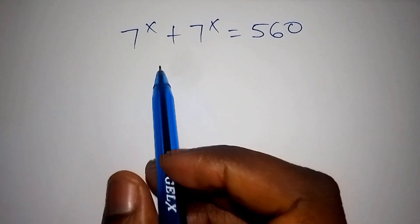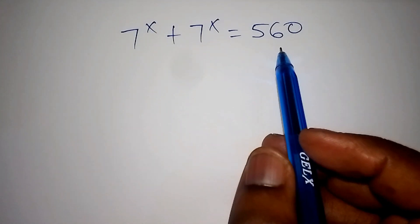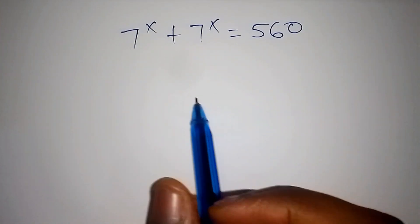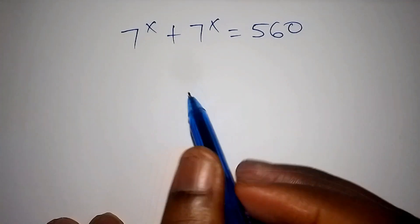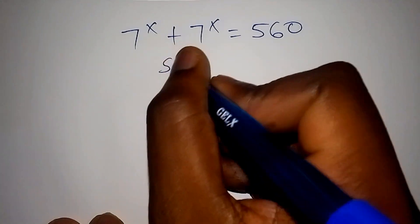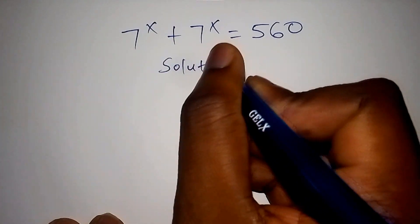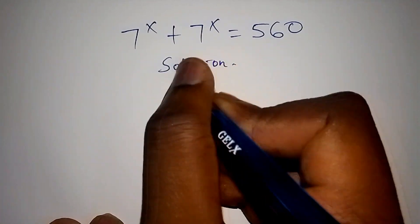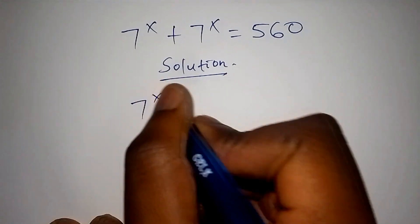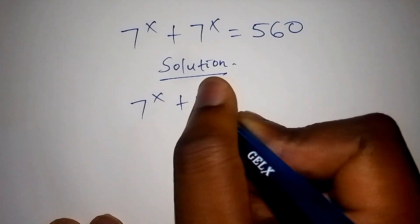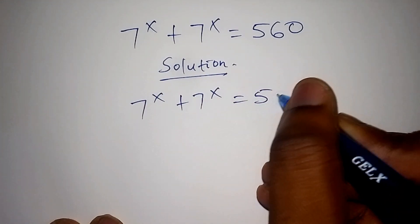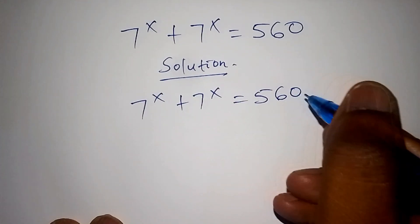Hello viewers, welcome as we work out this math problem within the shortest time possible. Make sure you watch this video up to the end. Let's start with the solution. We have 7 to the power of x plus 7 to the power of x is equals to 560.